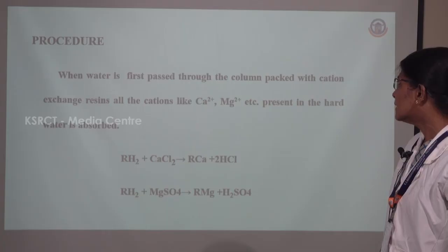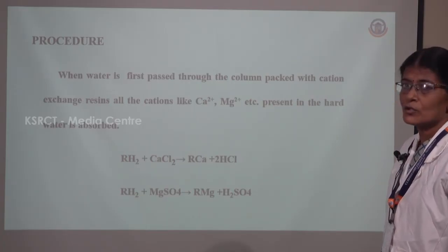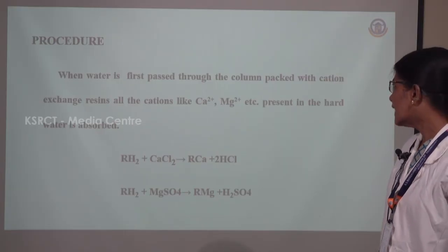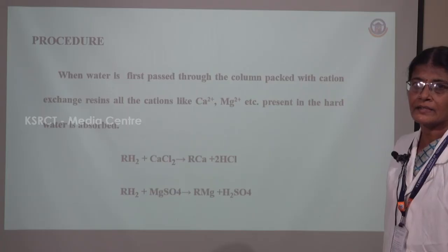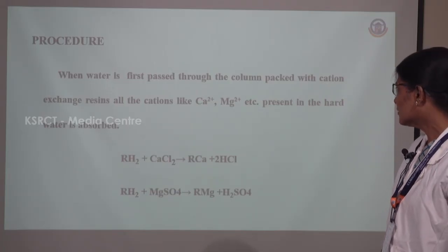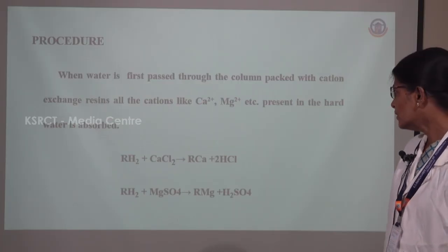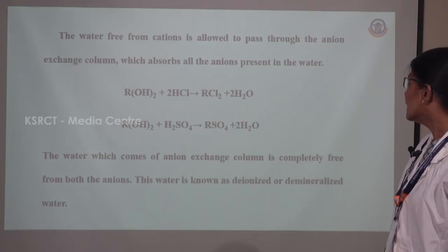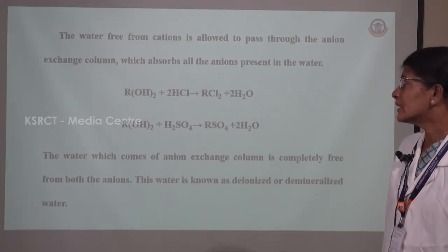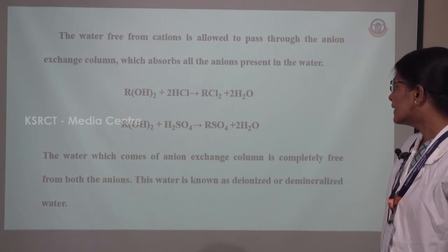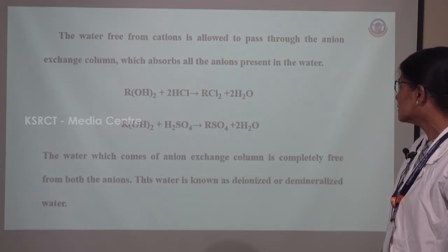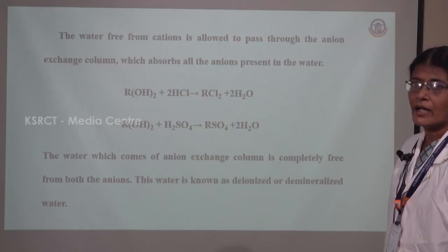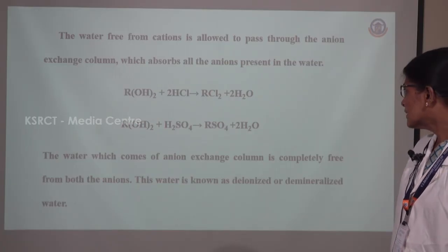The procedure involves two filters. Water is first allowed to pass through the first column packed with cation exchange resins, where calcium and magnesium ions are absorbed. The reactions in the first column are: RH₂ + CaCl₂ → RCa + 2HCl; RH₂ + MgSO₄ → RMg + H₂SO₄. The water coming out of the first column, which is free from cations, is then passed through the second column — the anion exchange column — which absorbs all the anions. The reactions are: ROH₂ + 2HCl → RCl₂ + 2H₂O; ROH₂ + H₂SO₄ → RSO₄ + 2H₂O.